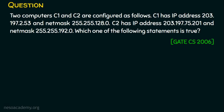When we look at the question, C1 and C2 each has its own IP address and subnet mask. When we look at them, they are not belonging to the same network, because C1 is using the subnet mask 255.255.128.0 and C2 is using the subnet mask 255.255.192.0. We are required to find which one of the following statements is true.